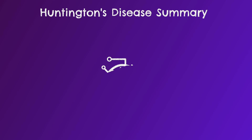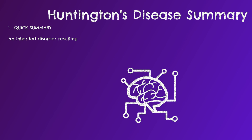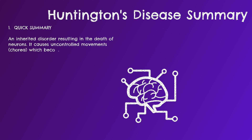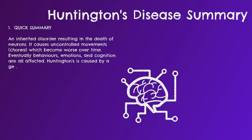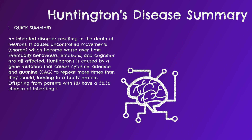A key part of learning is repetition, so here is a summary of Huntington's disease. It is an inherited disorder resulting in death of neurons, causing chorea which becomes worse over time; eventually behaviors, emotions, and cognition are all affected. HD is caused by a gene mutation leading to a CAG repeat expansion and a faulty protein. HD is autosomal dominant, so offspring have a 50% chance of inheriting the gene.